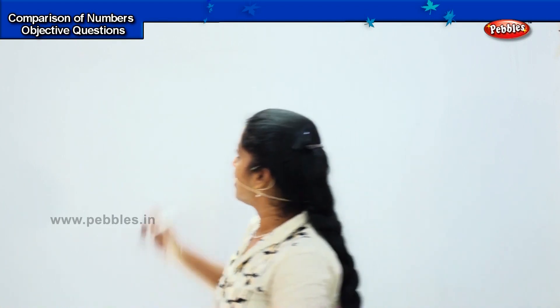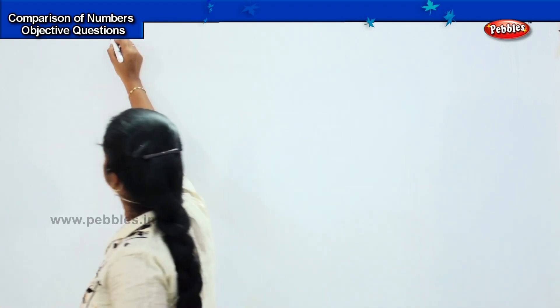The next question I am going to ask you is, you have to arrange these numbers in ascending order. You know what ascending order is? Ascending order is nothing but arranging from small to big. So here comes your question.